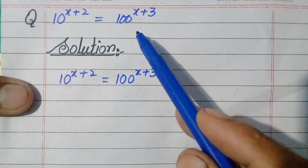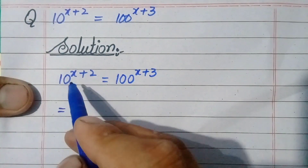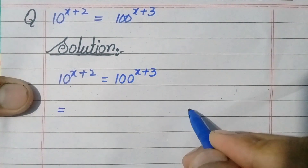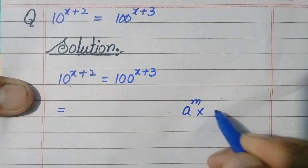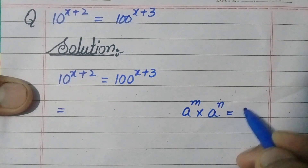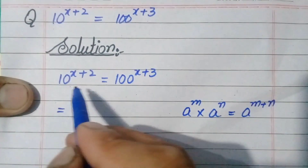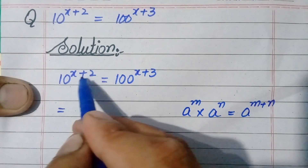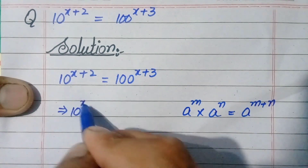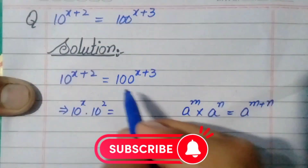First of all we will write this question in the solution again. In the second step we will split the powers of this number using the exponential formula: a power m multiplied by a power n equals a power m plus n. We will use this formula here, since there is addition of the two powers, and split them — it will become 10 raised to power x multiplied by 10 raised to power 2 equals, and we also apply this formula on the right-hand side.